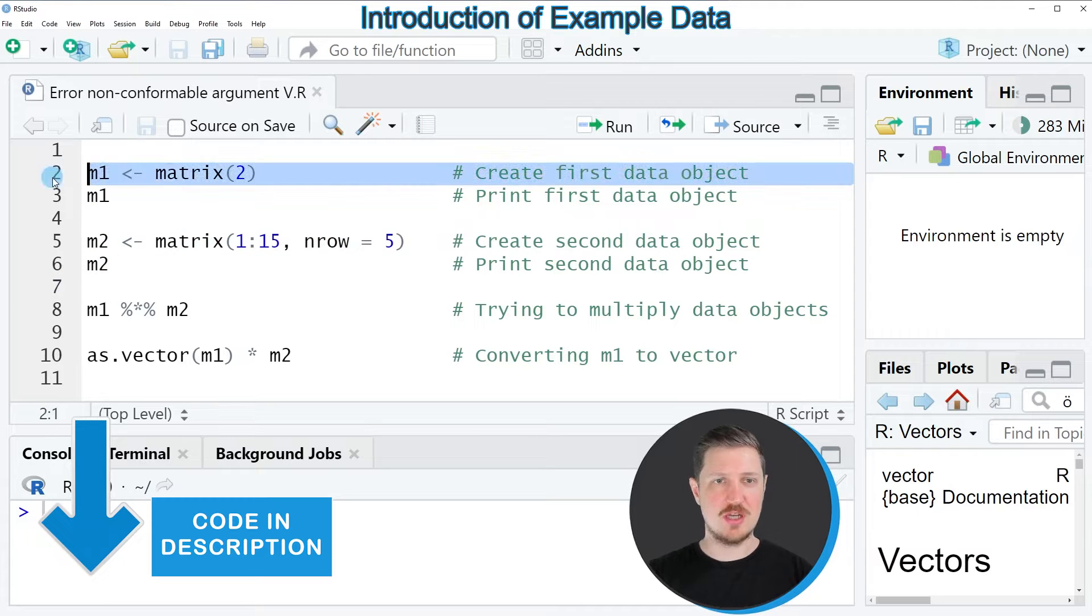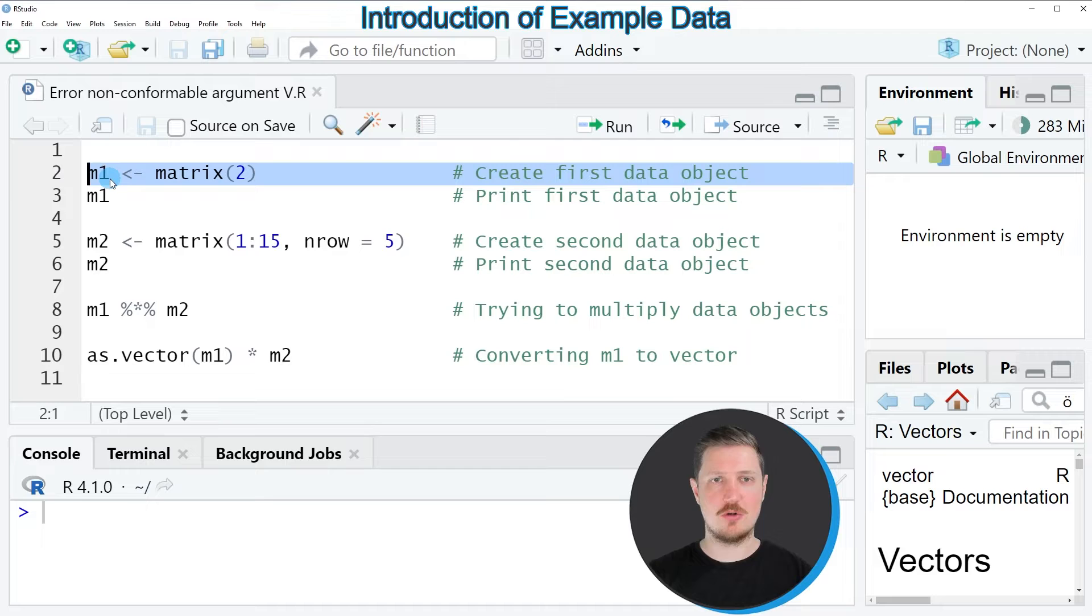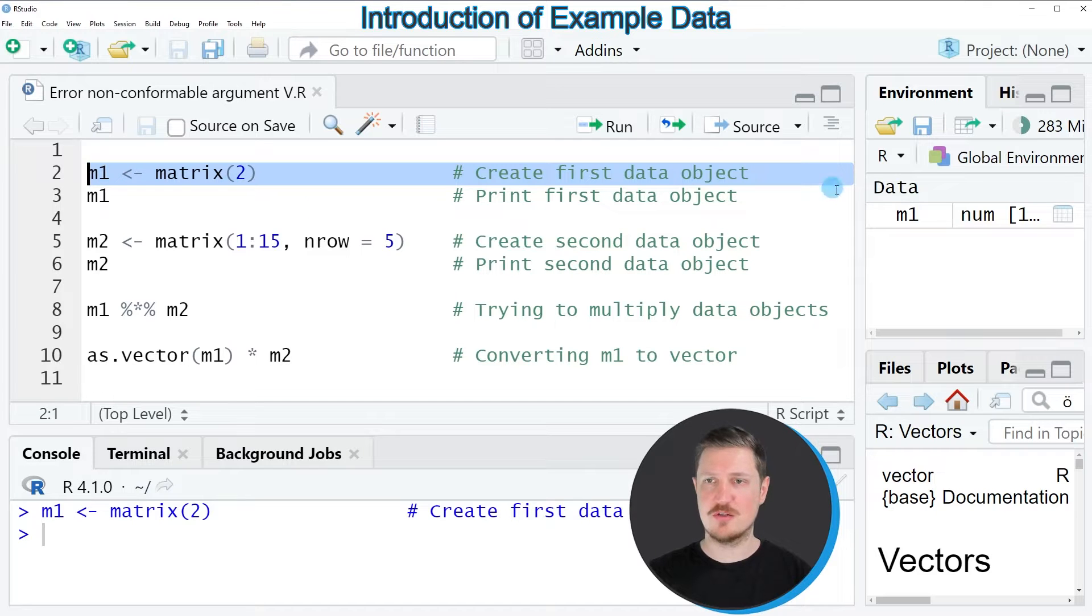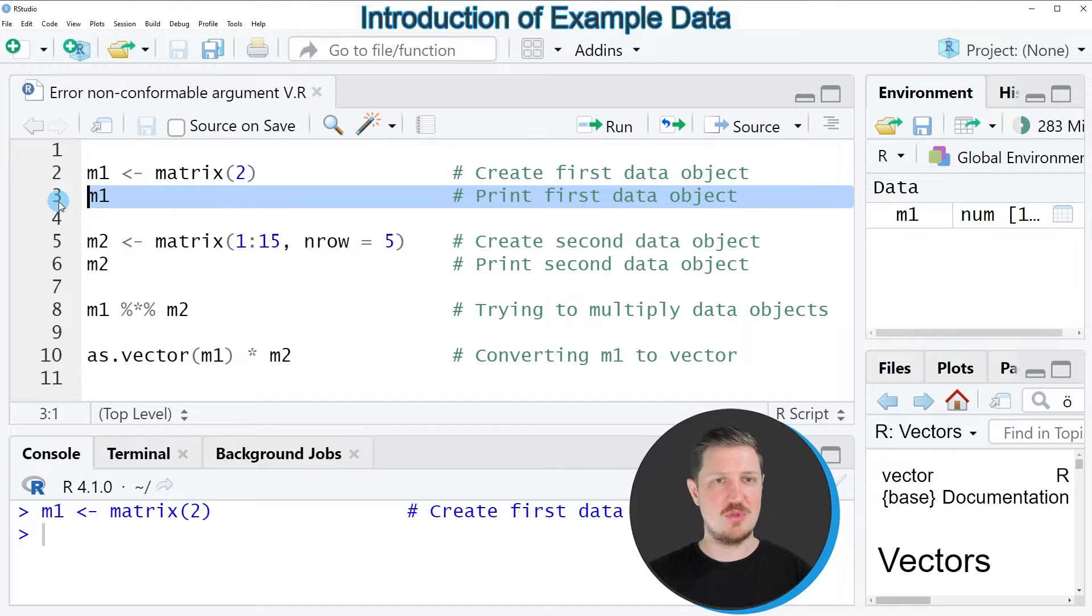So in line 2 of the code I'm creating a new data object called m1. After running this line of code you can see this data object appearing at the top right and we can print this data object by running line 3 of the code. As you can see after running line 3 our new data object m1 is a matrix that contains only one single value the value 2.